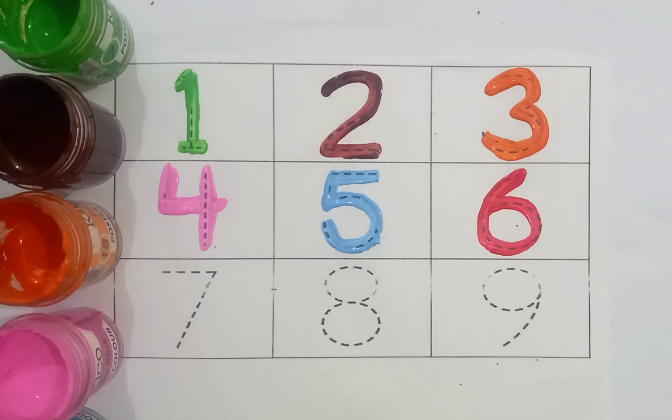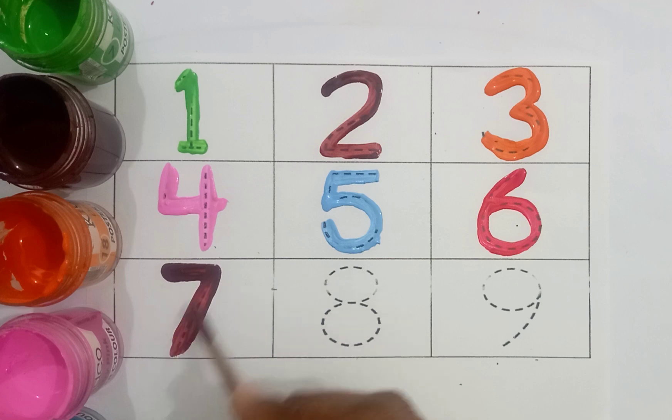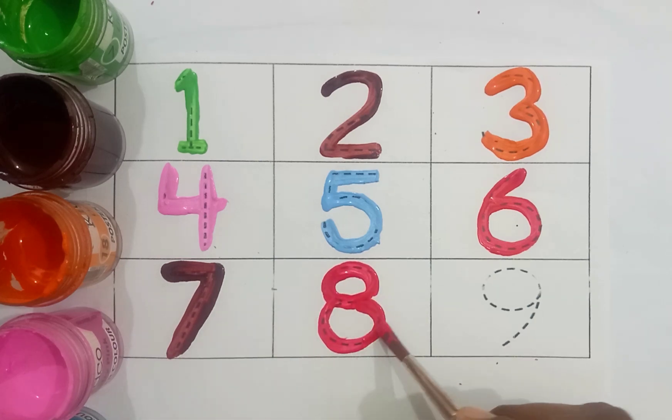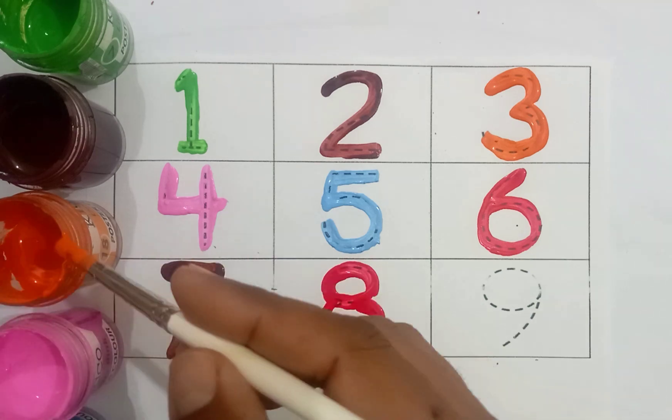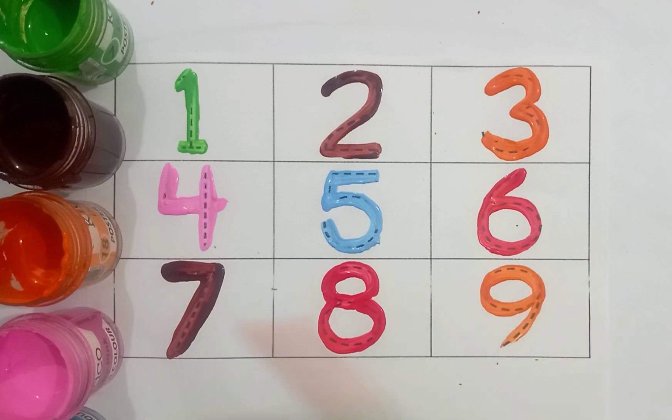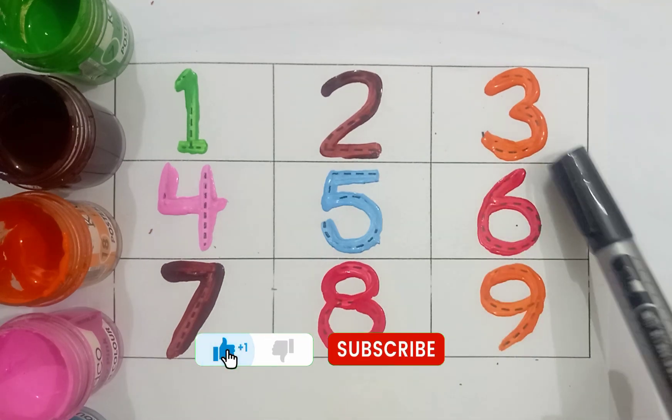Now I know my ABCs, next time. Dark brown color seven. Red color, color eight. Orange color, orange color nine. H I J K L M N O P. One, two, three, four, five, six, seven, eight, nine.